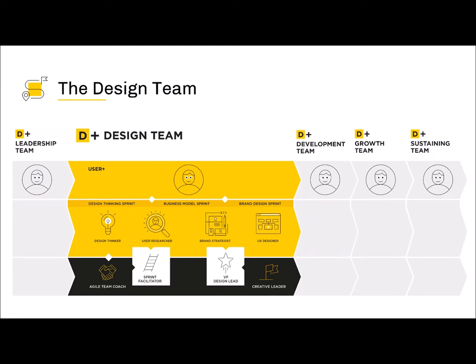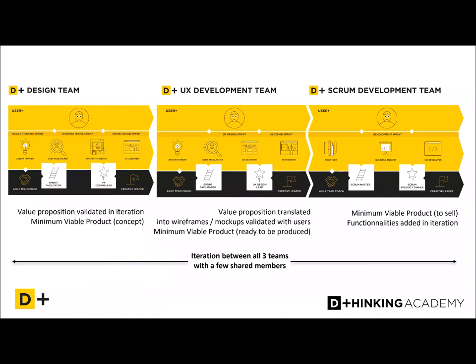You end up with what we call a minimum viable product. If you have a digital solution, you can take advantage of a UX development team — a UX designer and a UI designer — to translate this value proposition into wireframes and mockups validated with users. When this minimum viable product is ready, it is produced by the scrum team, which builds the app or website. Over time, in iterations, you can add functionalities defined by the design team and the UX development team.